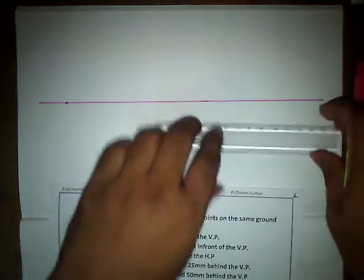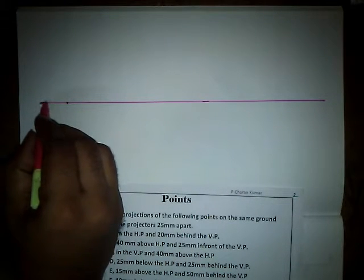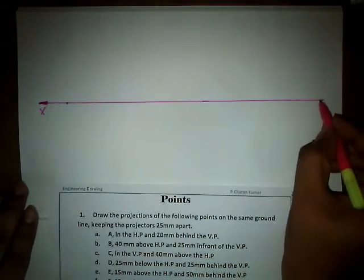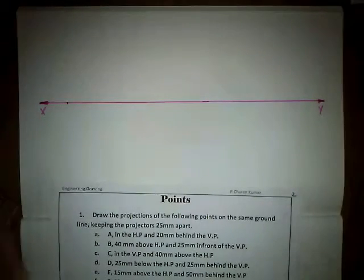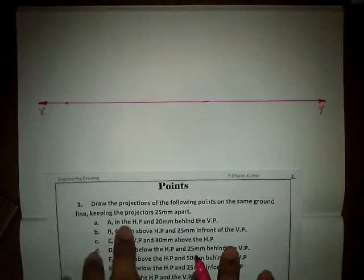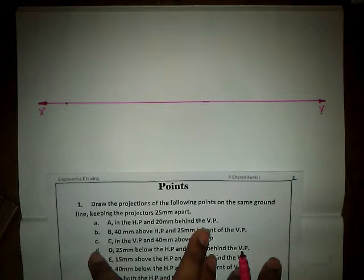As I said, we have to draw all the things from the same ground line. So I'm marking this as X and this one as Y. This is our ground line, XY reference line. On the same ground line, we need to draw the things. First one is point A is in HP and 20 mm behind the VP.